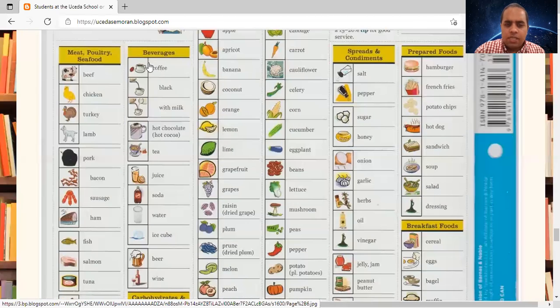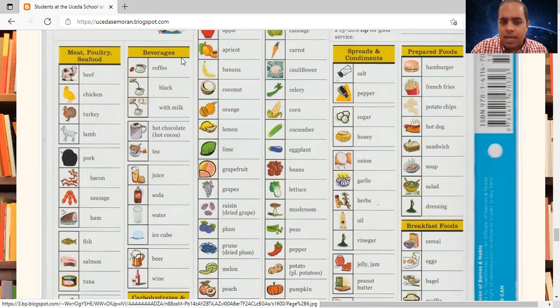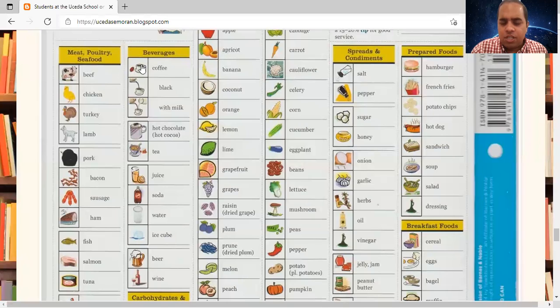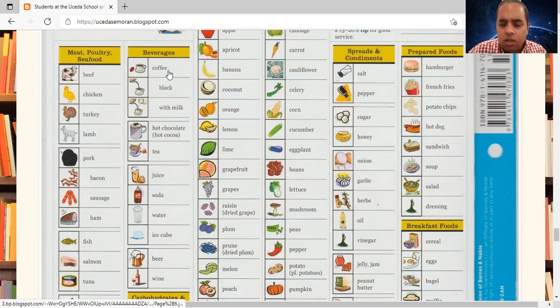Please say beverages. Beverages are the same as drinks. Coffee. Black coffee. Coffee with milk. Hot chocolate. Hot cocoa. Hot chocolate is the same as hot cocoa. It's the same thing.